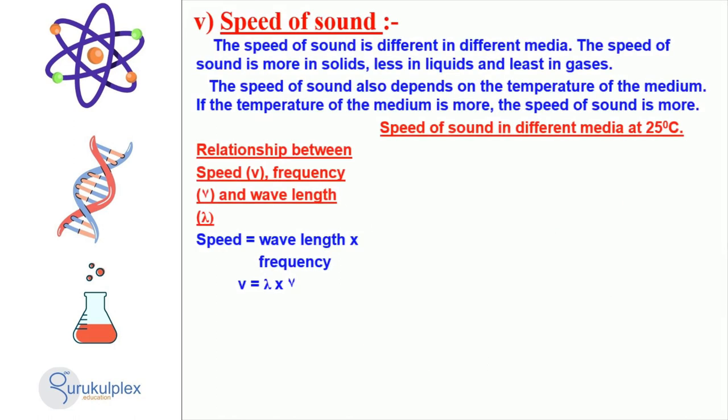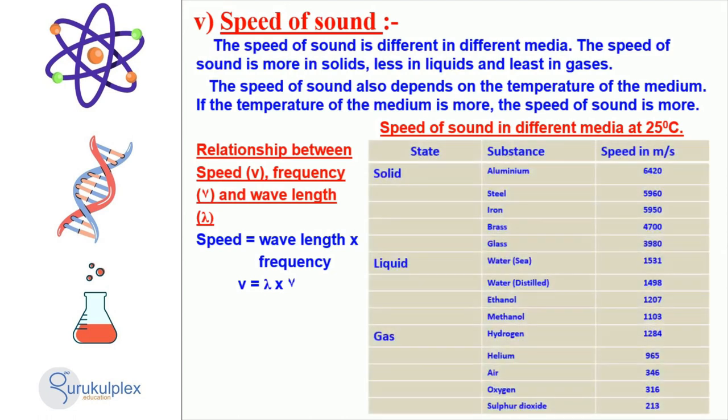At 25 degrees Celsius, solids generally have a higher speed of sound than liquids, which are faster than gases. Temperature also affects the speed of sound. When temperatures are higher, the speed of sound increases. The speed, frequency and wavelength of sound all have a relationship to each other, such that the speed of sound is equal to the wavelength of sound multiplied by its frequency.